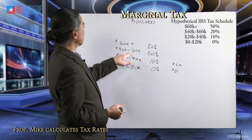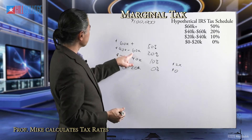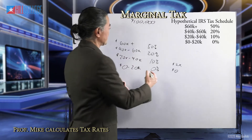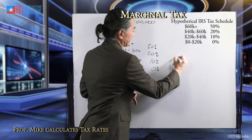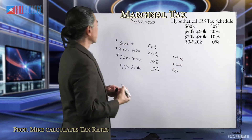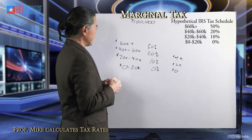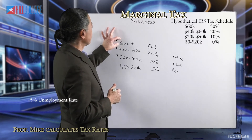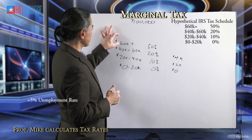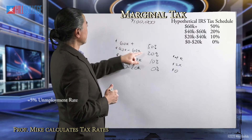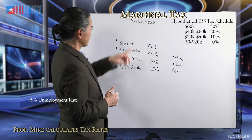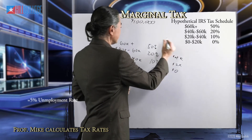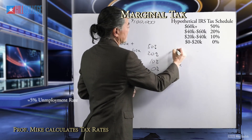Their next $20,000 — from $40,000 to $60,000 — will be taxed at 20%, so $20,000 times 0.2 is $4,000. And then anything above $60,000 will be taxed at 50%. There is $40,000 between $60,000 and $100,000, so this $40,000 taxed at 50% equals $20,000.